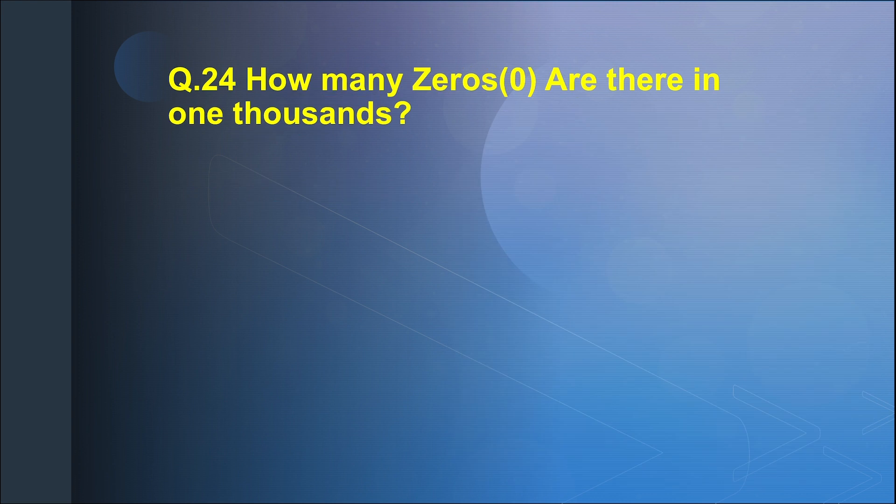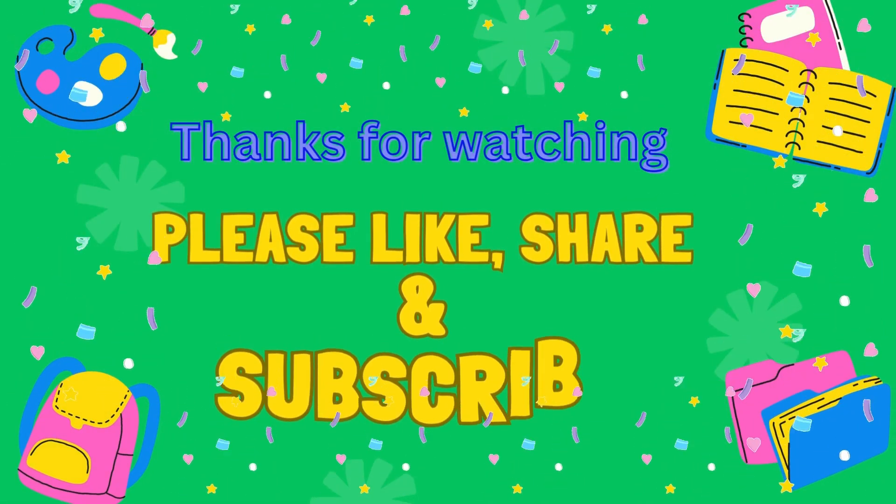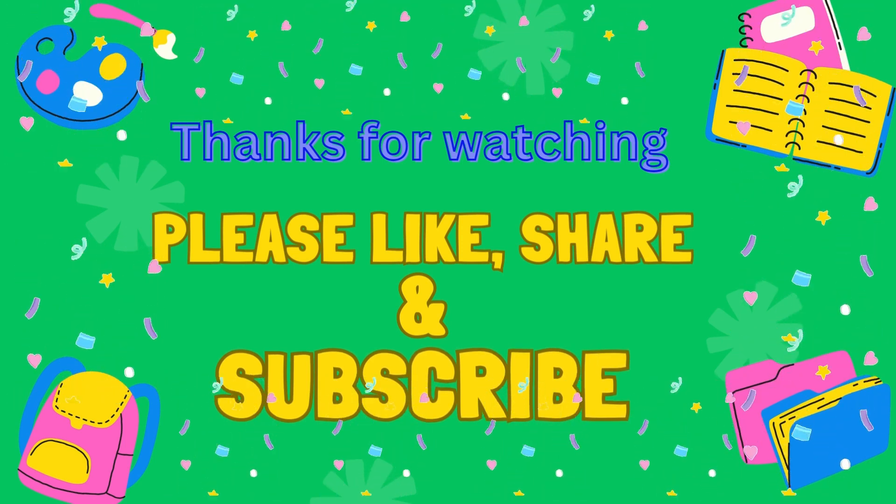Question 24. How many zeros are there in one thousand? Answer: Three. Thanks for watching. Please like, share and subscribe.